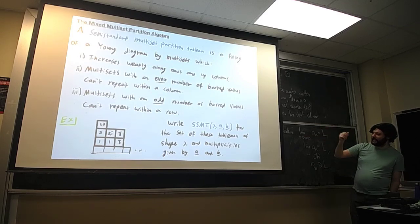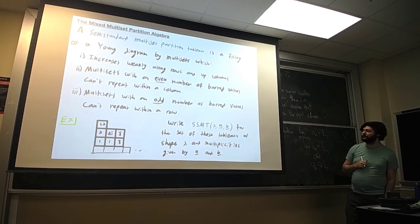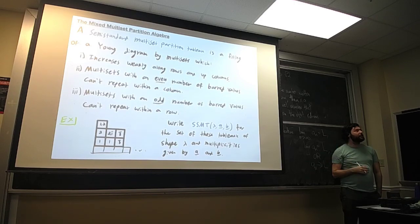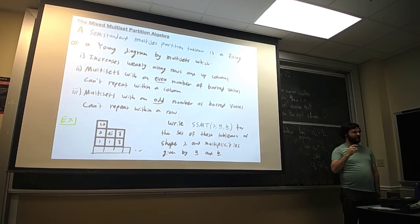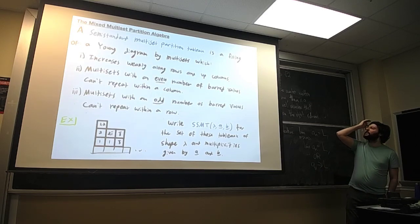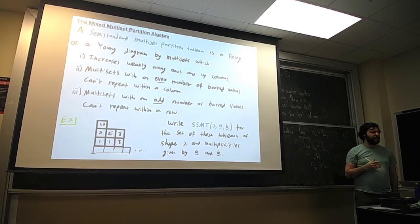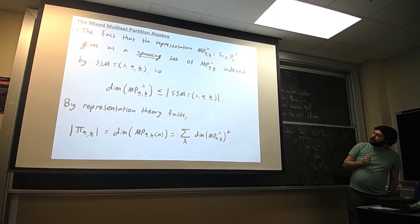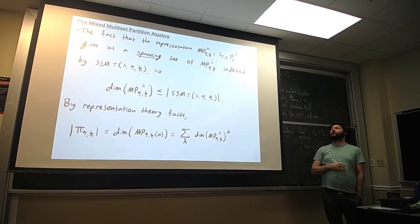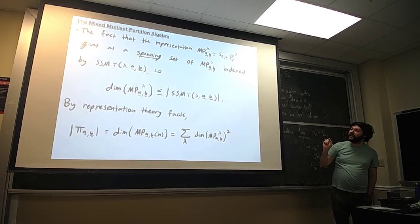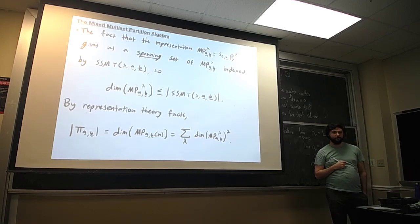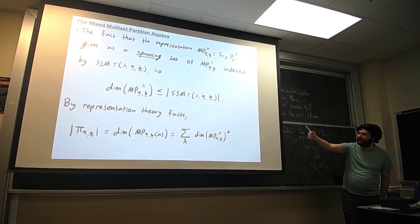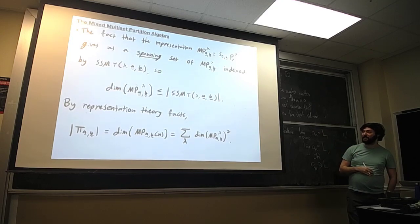We write SSMT(lambda; A, B) for the set of these tableaux of shape lambda with multiplicities given by A and B. At this point in the story I came across these tableaux, which seemed very strange to me — they have very different rules for different kinds of entries. But they showed up naturally when I tried to project my tableaux by these idempotents. From the perspective of looking at representations as projections of set partition tableaux, we have a spanning set indexed by these semi-standard multiset partition tableaux. So the dimension of these irreducible representations is at most the number of these tableaux.